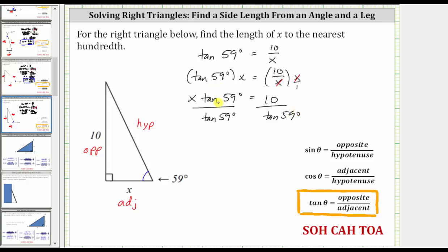Simplifying, tangent 59 degrees divided by itself simplifies to one, giving us x equals 10 divided by tangent 59 degrees. Now we'll go to the calculator to find this quotient and round to the hundredths place value.